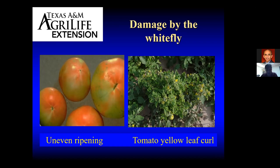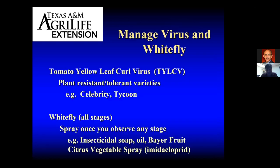So what can we do? Obviously we want to manage it. The abbreviation TYLCV is what you're going to want to see in your seed packets or on the varieties of tomatoes you grow — look for that abbreviation to see if they have a tolerance or resistance. There are some tomatoes commercially available to homeowners that do have some resistance. Some that come to mind are Celebrity and Tycoon, and part of the reason they perform well all over Texas is because they have tolerance or resistance to the tomato yellow leaf curl virus.